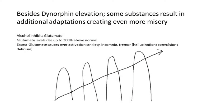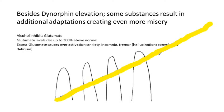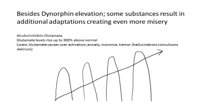Alcohol inhibits glutamate, which is an activating neurotransmitter. The peaks of alcohol, which suppress glutamate, cause glutamate levels to rise up to 300 percent of normal. And this is what causes the anxiety, restlessness, and insomnia in alcohol withdrawal.